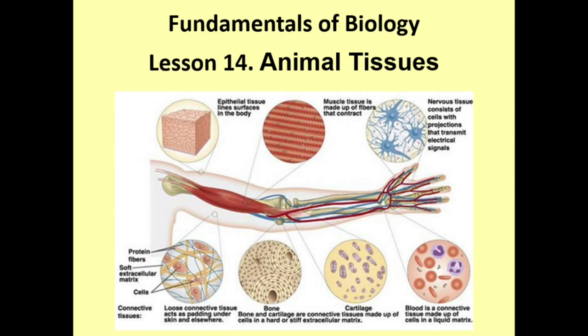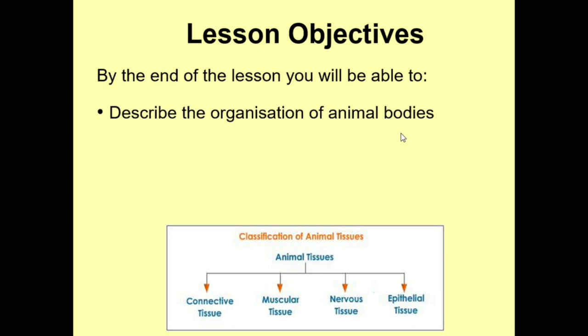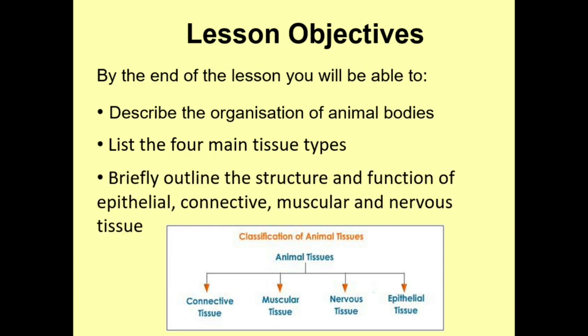Let's go through what we're going to cover today. By the end of this session, you should be able to describe the organisation of animal bodies, list the four main tissue types — epithelial, connective, muscular, and nervous — and briefly outline the structure and function of those four main types of tissue. Later in this session we'll look at those in more detail.